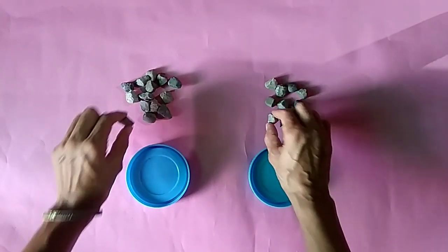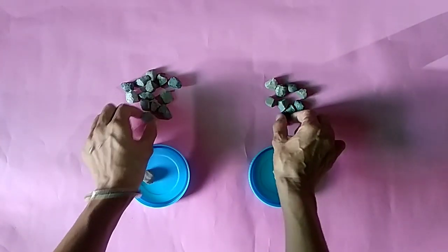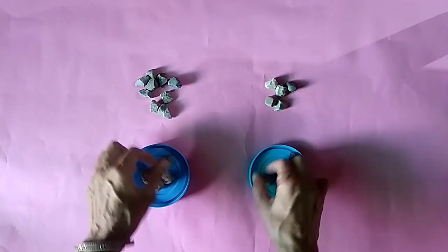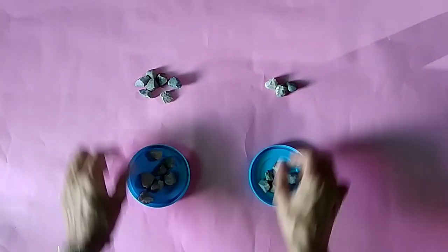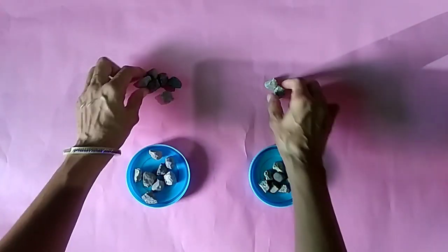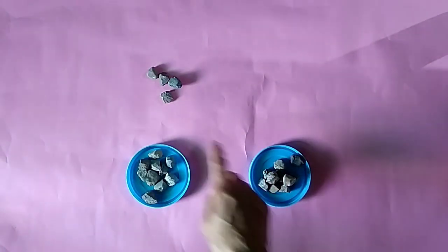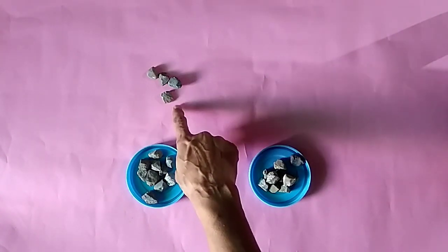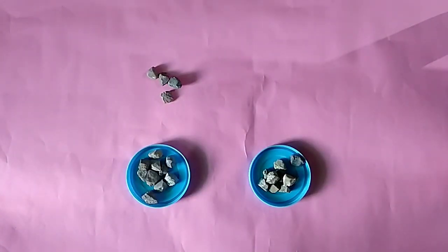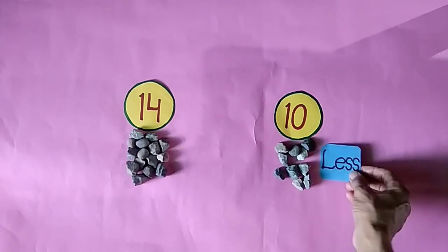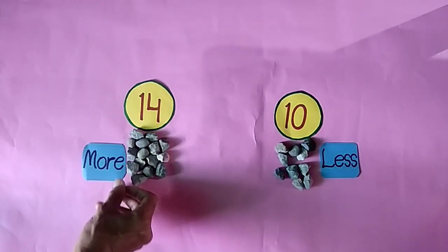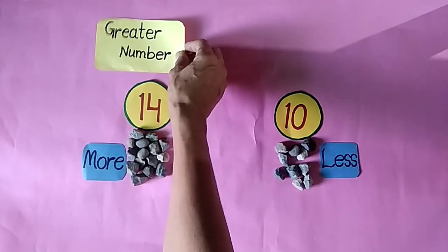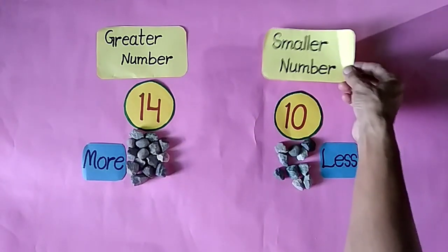Take 1, 2, 3, 4, 5, 6, 7, 8, 9, 10. There, 4 pebbles are left. So these are more pebbles. So these are less pebbles and these are more. So 14 is the greater number and 10 is the smaller number.